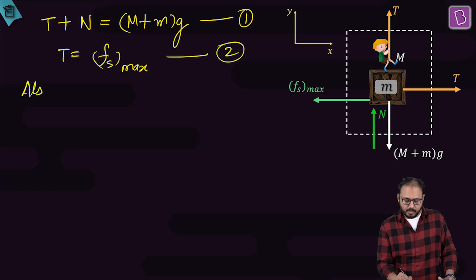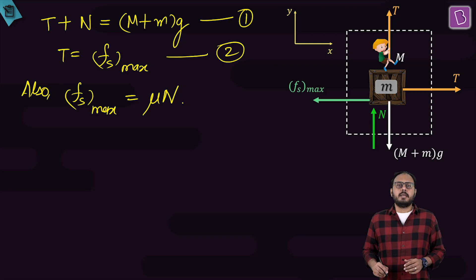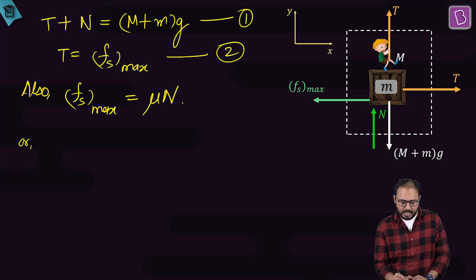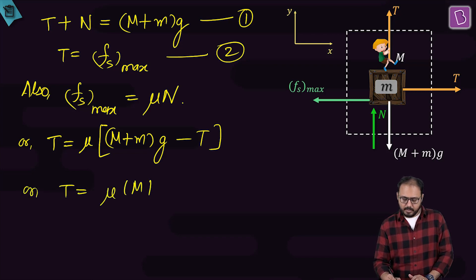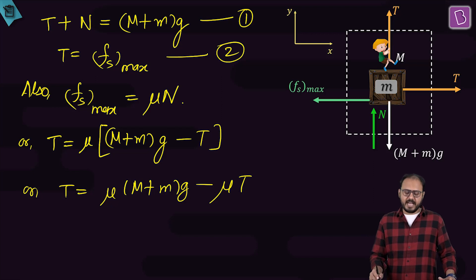Also, Fs max is equal to mu N. Can I use all three facts and make sure I combine them? How do I do that? T is equal to mu N. Can I take the value of N from equation 1 and put it inside? So N is M plus Mg minus T. Or T is equal to mu M plus Mg minus mu T. Can you give me the answer now?